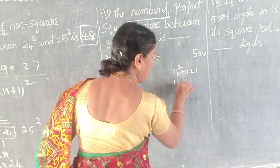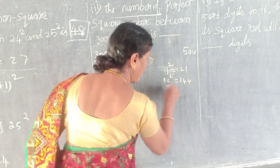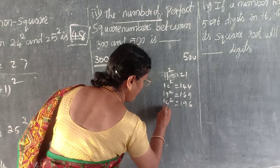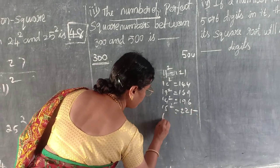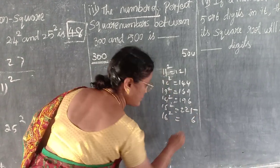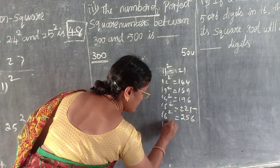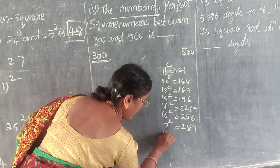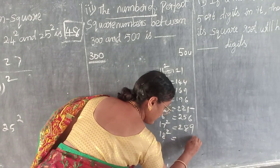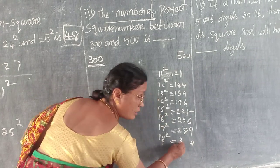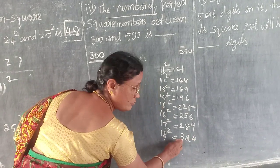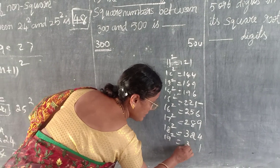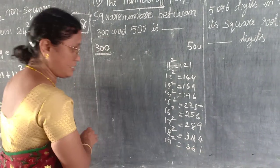From 11, just recall them and you will be able to write this. 11² is 121. 12² is 144. 13² is 169. 14² is 196. 15² is 225. 16² — 6 means ends with 6, so its predecessor gives 256. 17² is 289. 18² — 8 means ends with 4, predecessor 3, so 324. 19² ends with 1, next is 36, 3 plus 6 is 9, so 361.